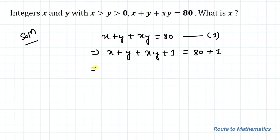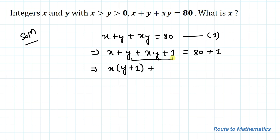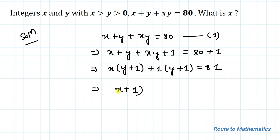Now let's take x common from the first two terms, giving x multiplied with y plus 1, and 1 common from the remaining terms, giving 1 multiplied with y plus 1, equals 81. So we can write (x plus 1)(y plus 1) equals 81 — let's take this as equation 2.